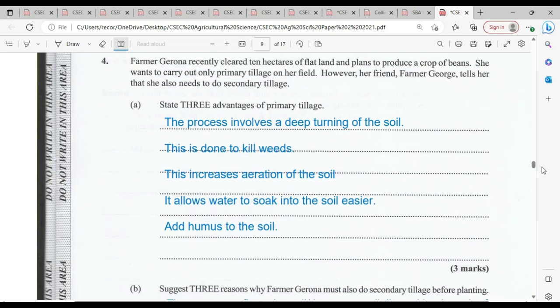Farmer Girona recently cleared 10 hectares of flatland and plans to produce a crop of beans. She wants to carry out only primary tillage on her field. However, her friend, farmer George, tells her that she also needs to do secondary tillage. State three advantages of primary tillage.